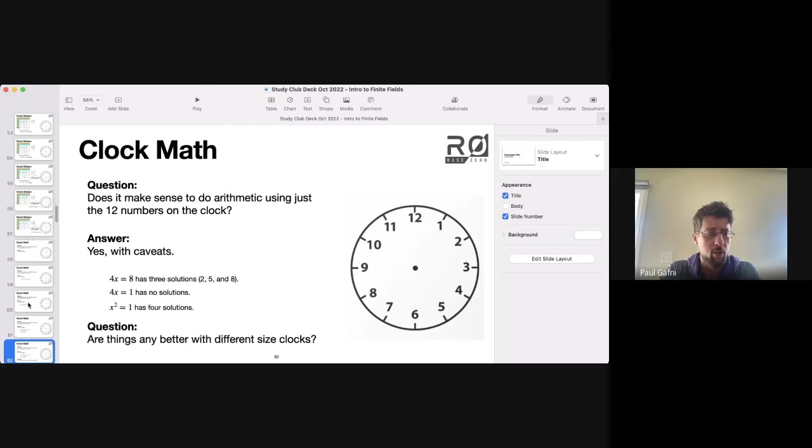So here's what I mean by those caveats. In fact, I have a surprise one here. 4x equals 8 has three solutions. 4x equals 1 has no solutions.